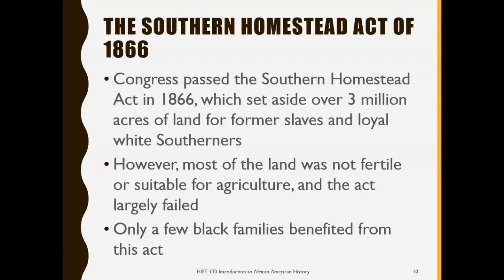Another effort to give land to former slaves was the Southern Homestead Act of 1866. Congress passed this act to set aside over 3 million acres of land for former slaves and some southern whites. However, the land that was allocated by this act was not proper for cultivation — it was not fertile and was not suitable for agriculture. As a result, the act really failed in its purpose, and only a few black families benefited from it.